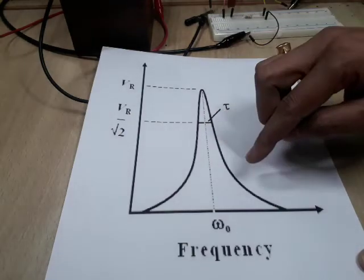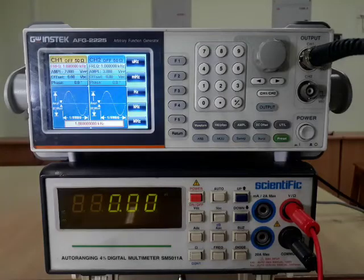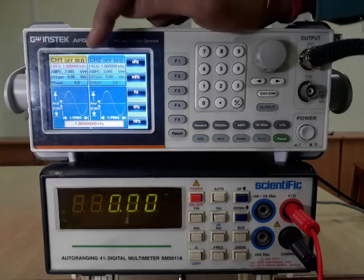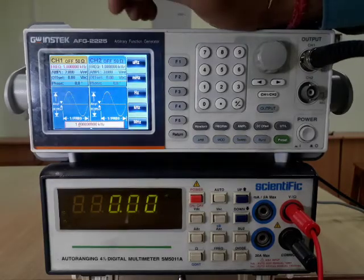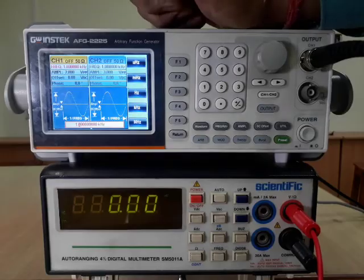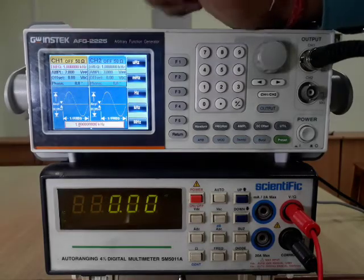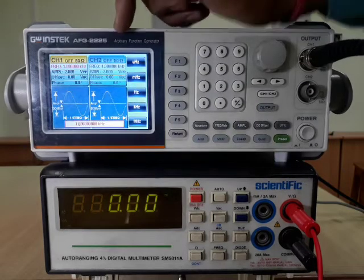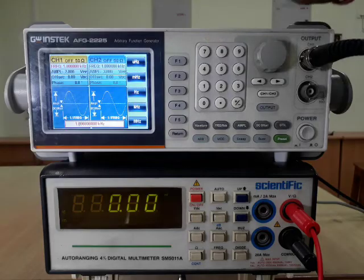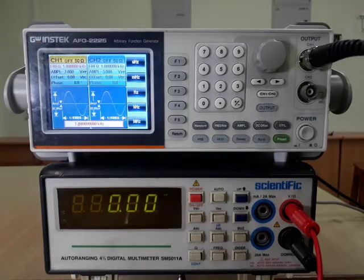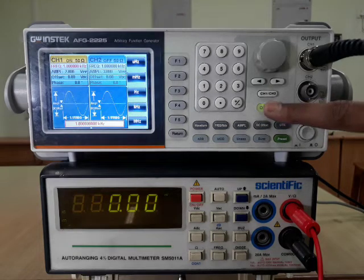And later on we can again increase the intervals of frequencies. As we can see, we will start from the frequency 1 kHz. The amplitude of this function generator is set at 2 volt peak to peak. Offset is adjusted at 0 volt and phase at 0.0 degree. We can see its internal impedance is 50 ohm and that will be considered later on. Now, by pressing this output button, the experiment will start.